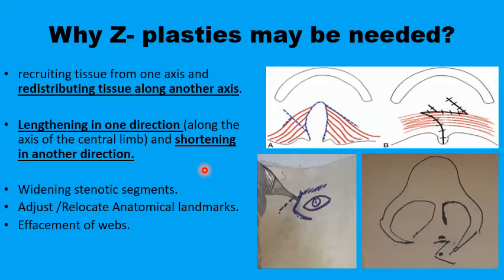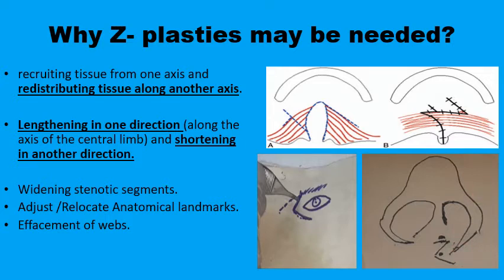This principle can be used for widening of stenotic segments by adding more tissues in the stenotic part, readjusting or relocating important anatomical landmarks like the corner of the eye or the base of the ala of the nose, or effacement of a web — in which you take the redundant extra tissues from one area and redistribute them to flatten the wound in another area.